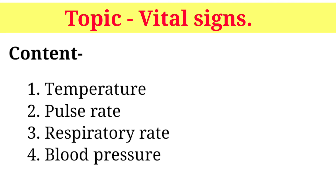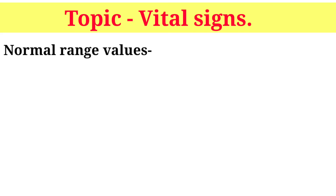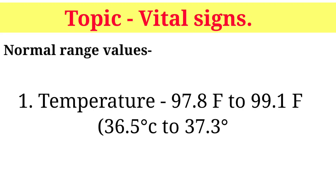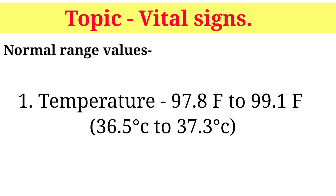The normal temperature value in adults is 97.8°F to 99.1°F, which equals 36.5 to 37.3 degrees Celsius.